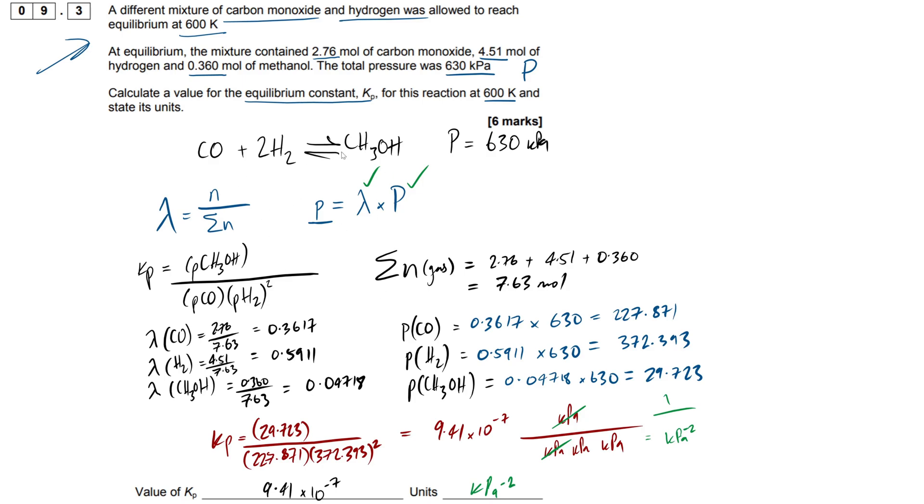So then looking at the mark scheme, where do our marks come from? So first off, we got a mark for the KP expression. The next mark is for our total moles, which is the 7.63. Next is going to be all of our partial pressures of our individual gases here. So this would be two marks collectively for all of these partial pressures. Now they skipped out the stage of working out the mole fractions. I assume this would be one mark and this would be two, but they just left it out of the mark scheme. So this here is two marks, and then filling in our values and inputting them into the KP expression is our fifth mark, and then our units here is our sixth mark.